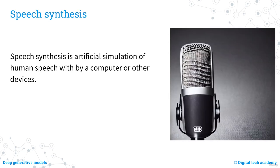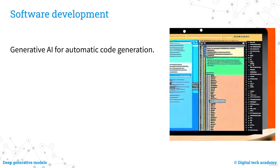Speech synthesis is the process of creating artificial human speech using computers or other devices. It can be used for text-to-speech applications or to replicate the voice of a specific person, enabling computers to produce human-like speech for purposes such as providing spoken descriptions of visual content or generating audio versions of written documents. AI can also be utilised by software developers to automate tasks related to code writing and review, bug detection, software testing, and project optimization — improving productivity, speeding up time to market, and saving cost.